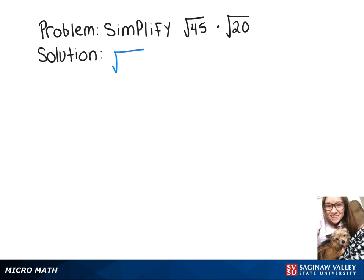The first is to think of perfect squares that go into each of these. We know that 9 times 5 is 45, and that 4 times 5 is 20. So then that turns into 3 root 5 times 2 root 5.